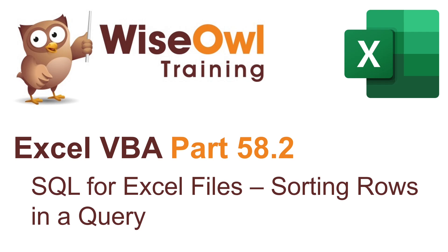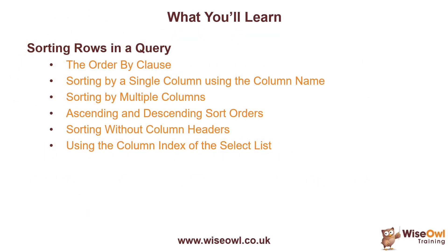Welcome to this Wise Owl Excel VBA tutorial. In this second part of our series on writing SQL for Excel files, we're going to look at how to sort rows in a query. We'll start with a quick introduction to the ORDER BY clause, then explain how to sort by a single column, multiple columns with ascending and descending sort orders, how to sort when the data source has no column headers, and how to use the column index of a column in the SELECT list.